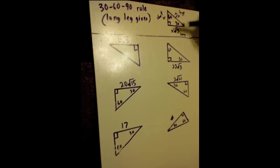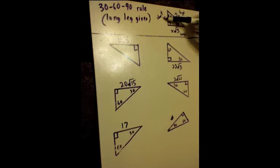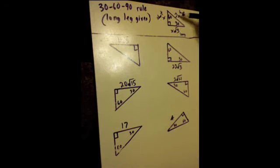Everything works backwards too. If you know the long side, you divide it by the square root of 3 to get the short side. And if you know the short side, you multiply it by 2 to get the hypotenuse.